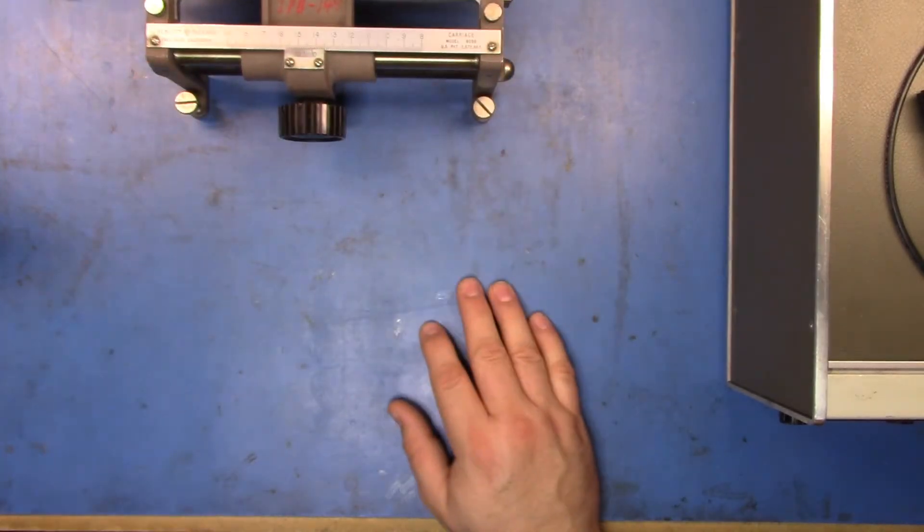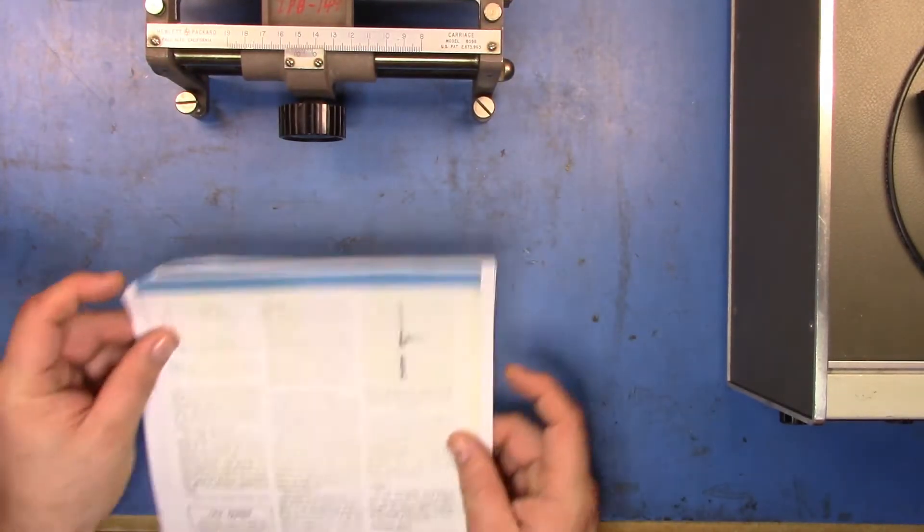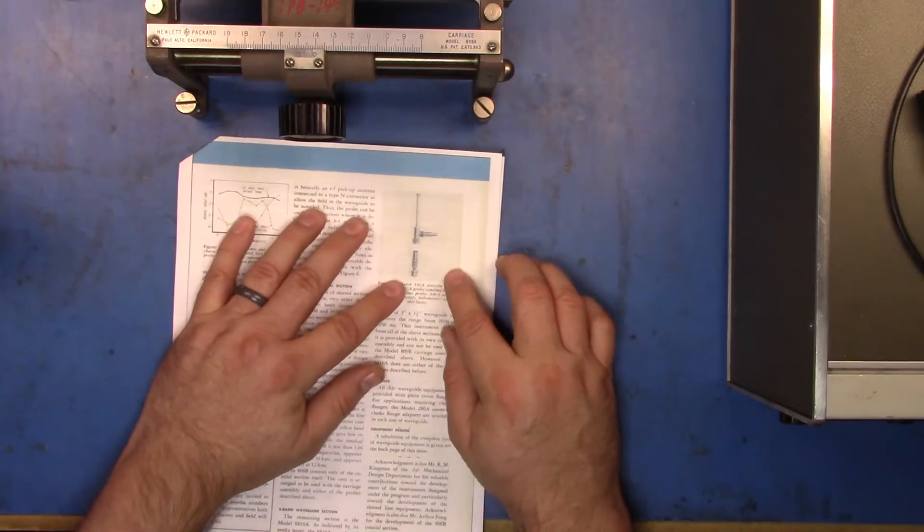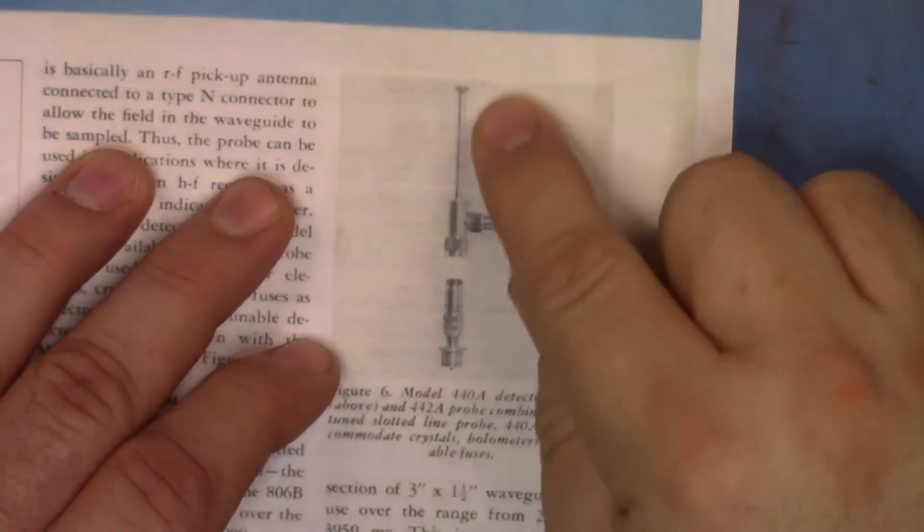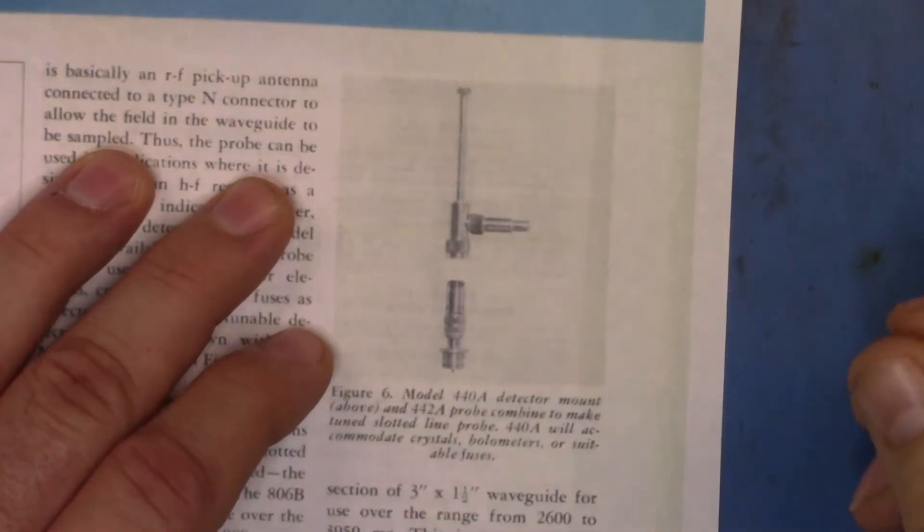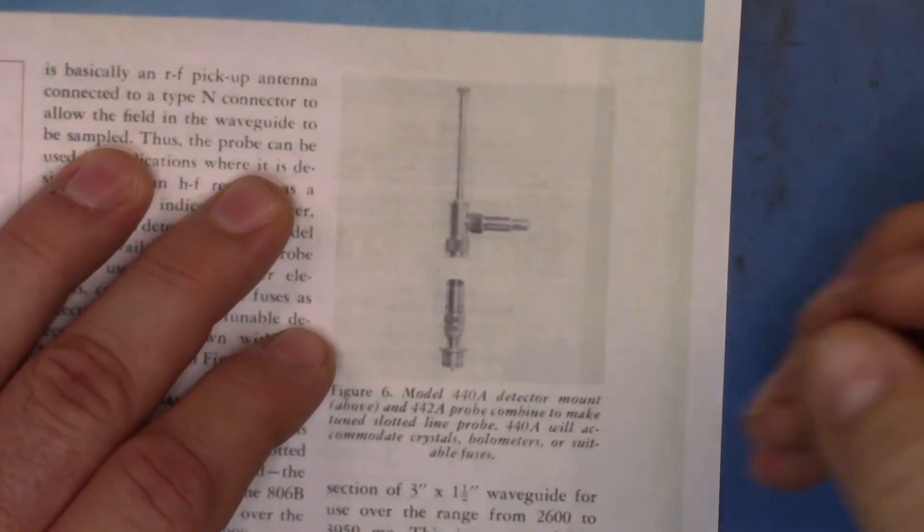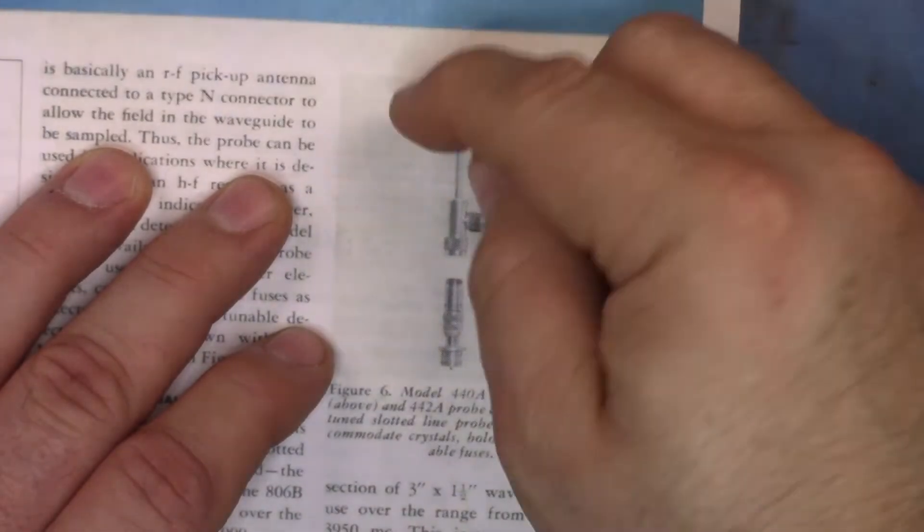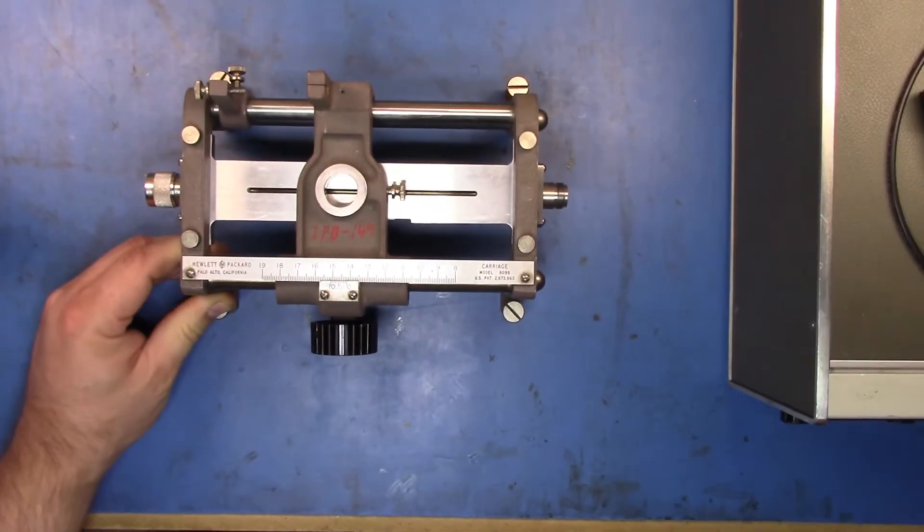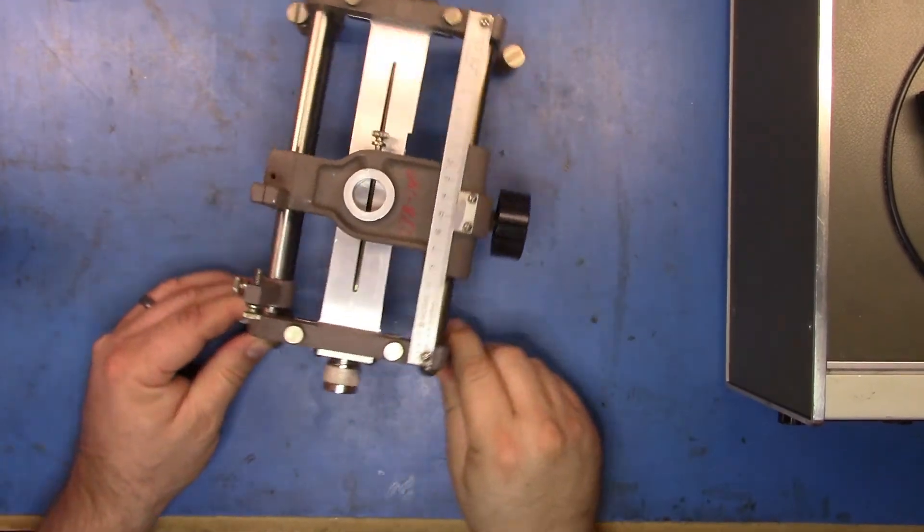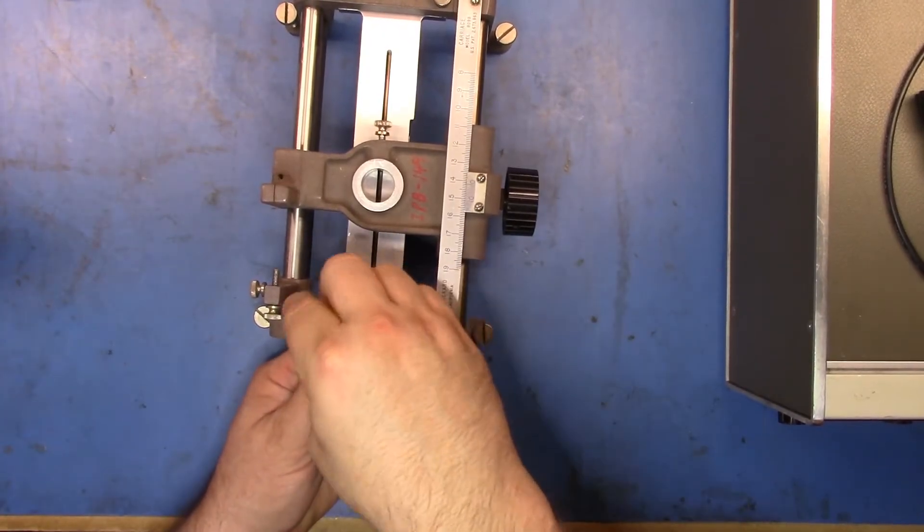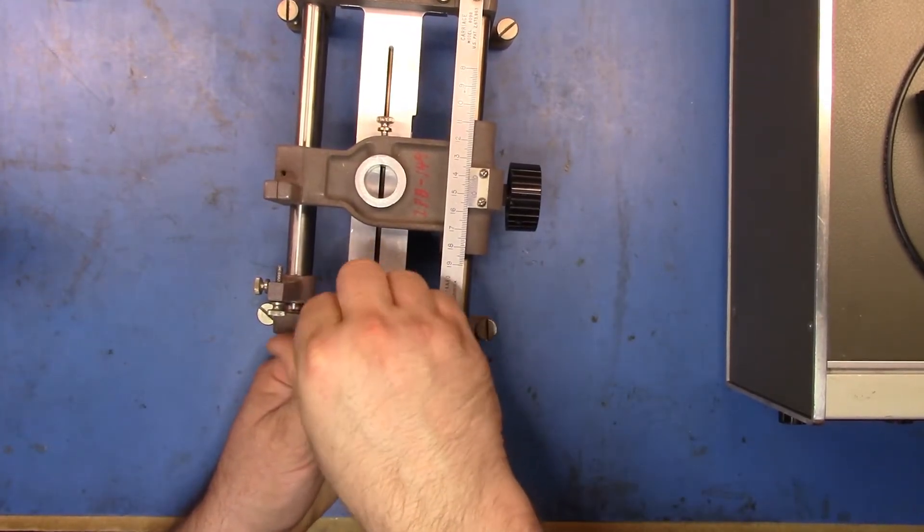If you needed something different, you might get a detector like this. This is a tuned detector mount, the 440i. You can put a detector on it and then tune the cavity so you get the response you're after.